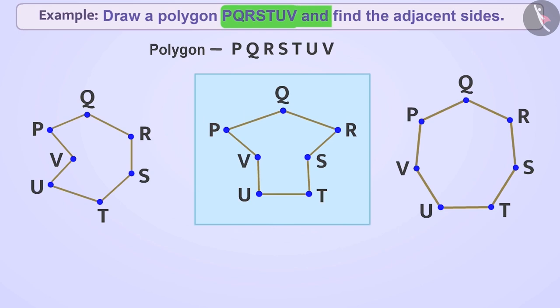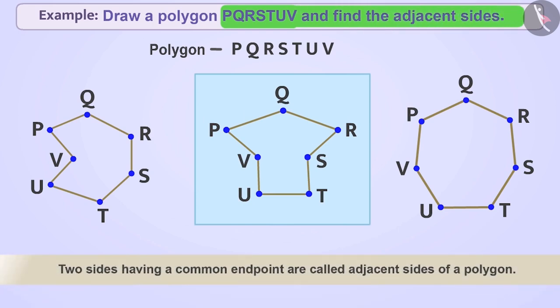Now, let's find adjacent sides in a polygon. As you know, the two sides having a common end point are called adjacent sides.